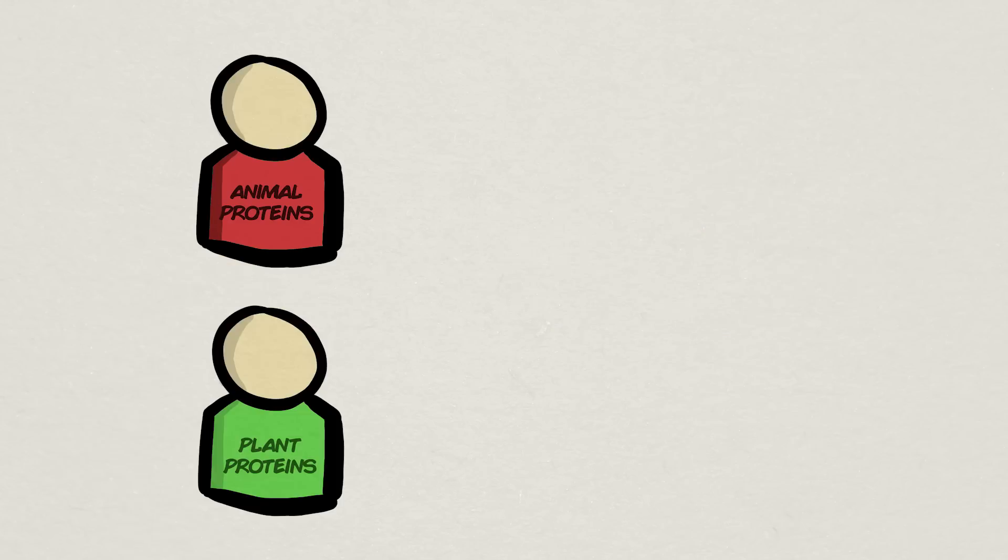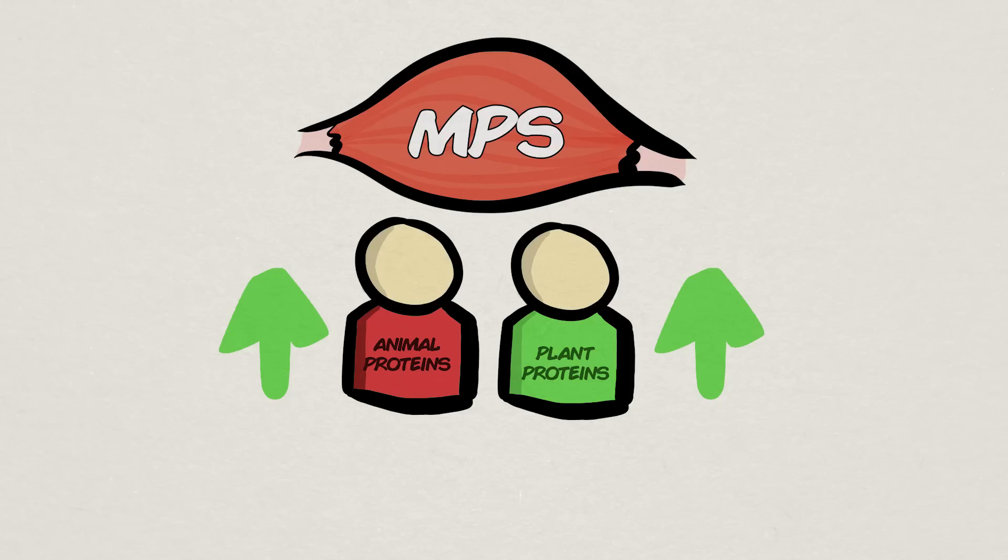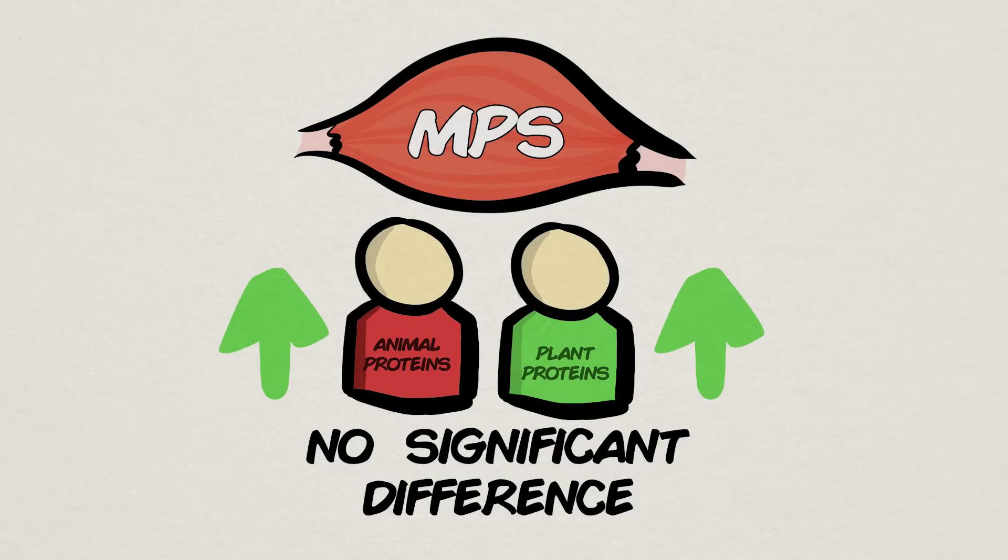In both of these two studies, researchers gave one group of healthy young men animal-based proteins like chicken breast and milk protein and gave another group of healthy young men plant proteins like wheat and chickpeas. In the end, both animal and plant proteins were able to stimulate muscle protein synthesis at similar rates. Great news for our plant-loving friends.